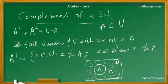So A dash is X is an element of U such that X is not an element of A. It simply means that in this particular set, we are looking at those elements of the universal set which are not present in a given particular set A.